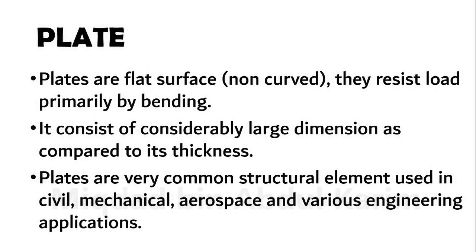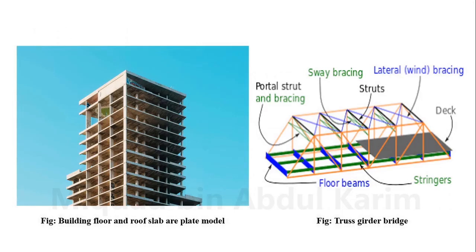Let me show you some applications of plate. Consider a multi-story building as shown in the figure. We can see different structural elements here. One is the vertical element, mainly the column, which carries the compressive load, and the horizontal element which connects the columns, called beams. There are also flat plate-like elements that are called slabs.